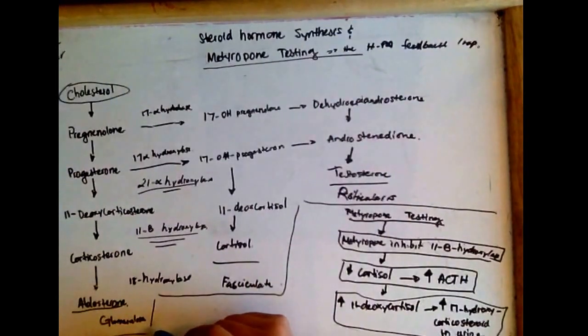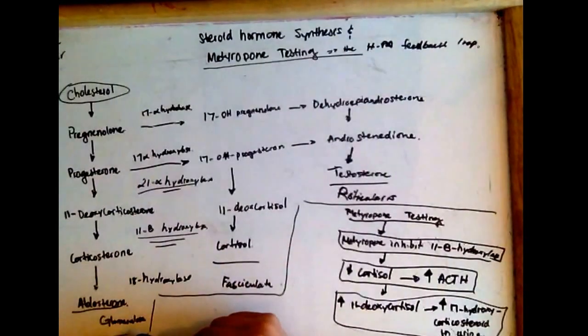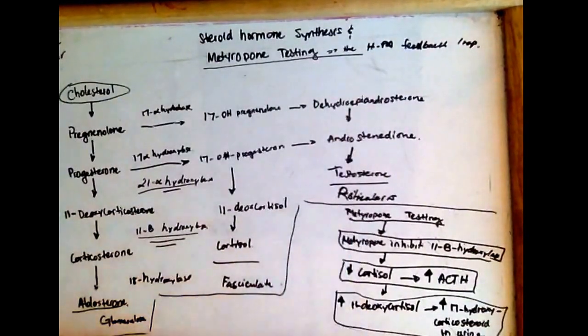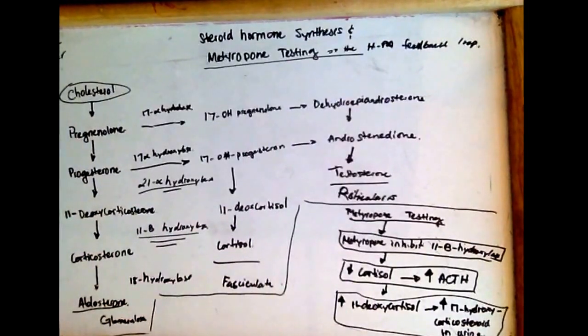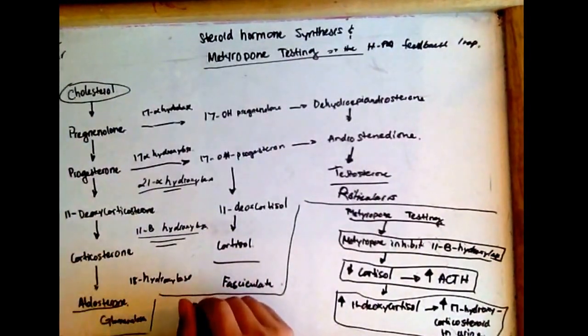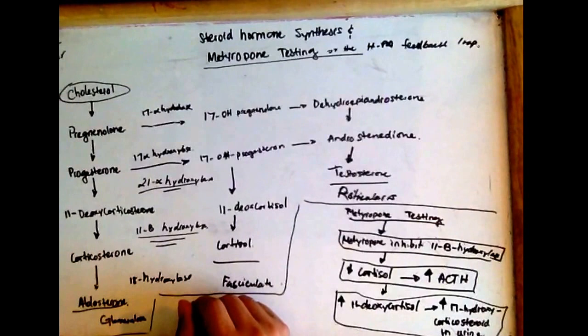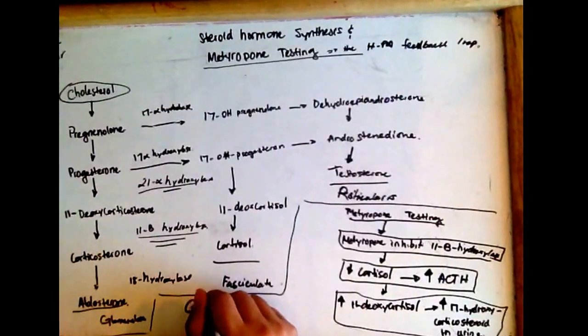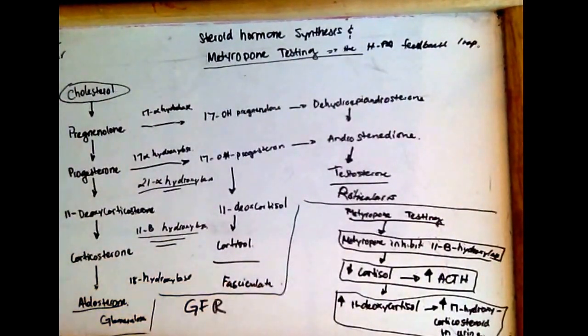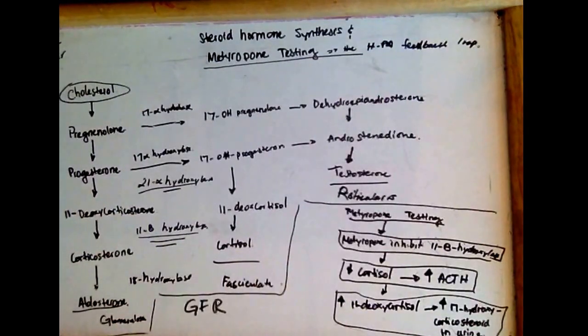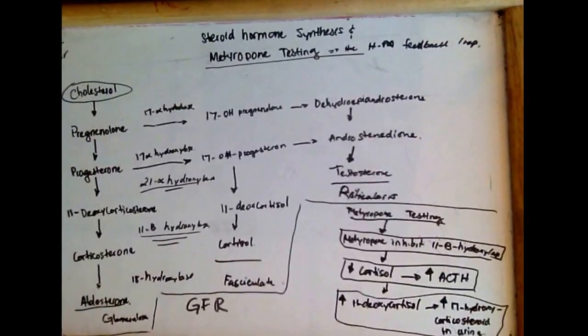The adrenal cortex is divided into three layers: the glomerulosa, fasciculata, and reticularis. We can memorize this by the mnemonic GFR, like glomerular filtration rate: G is glomerulosa, F fasciculata, and R reticularis. Each layer produces particular steroid hormones.